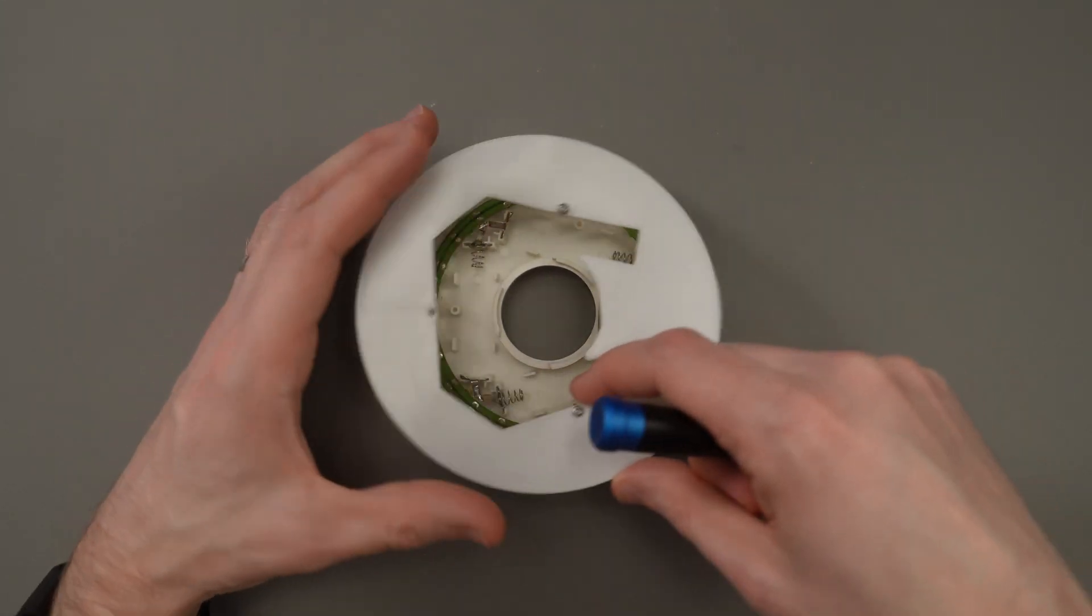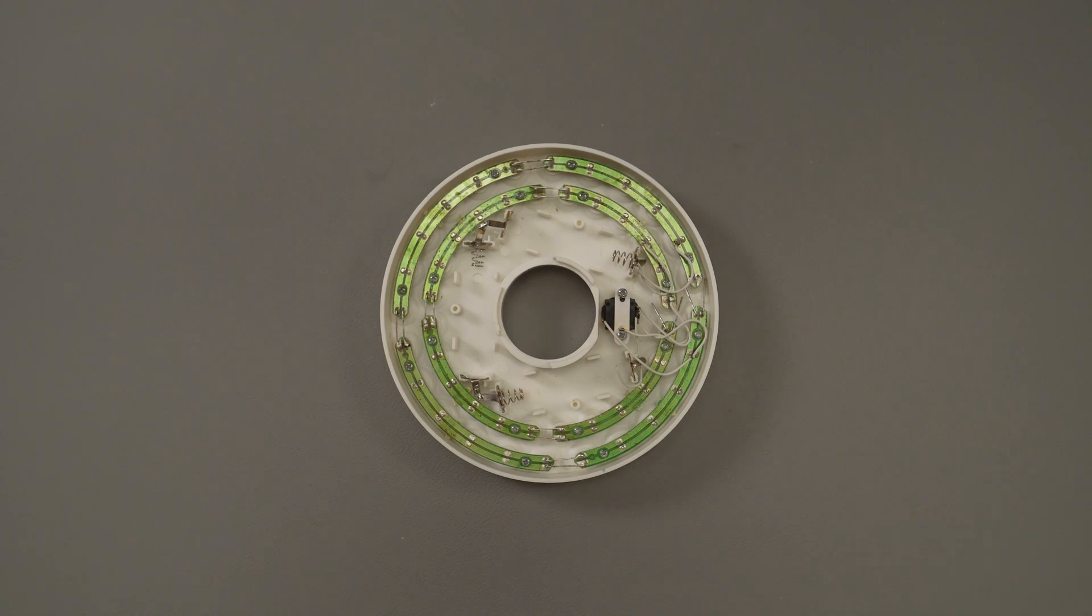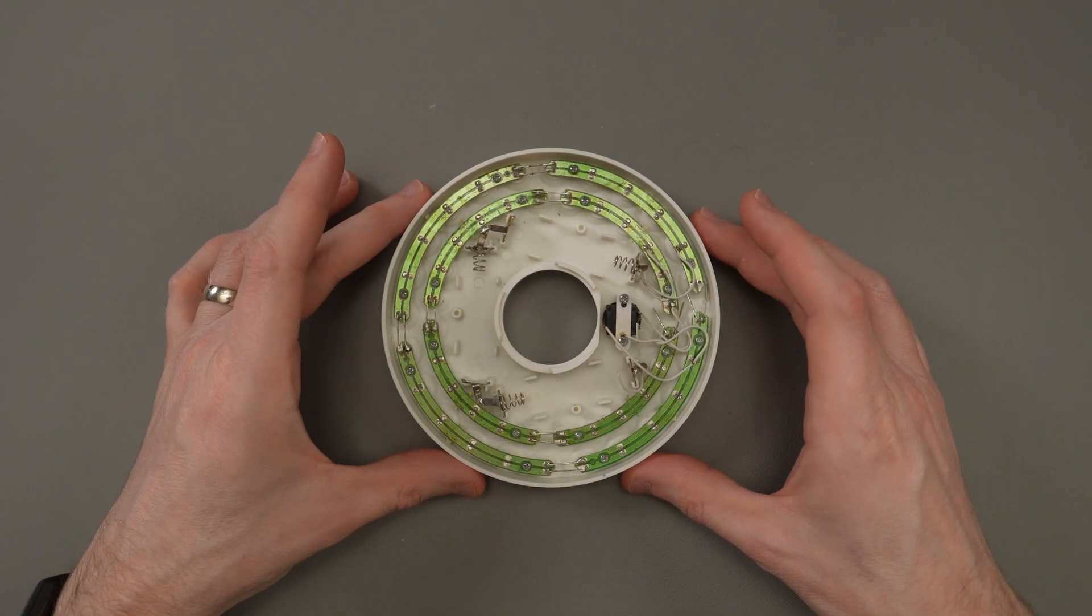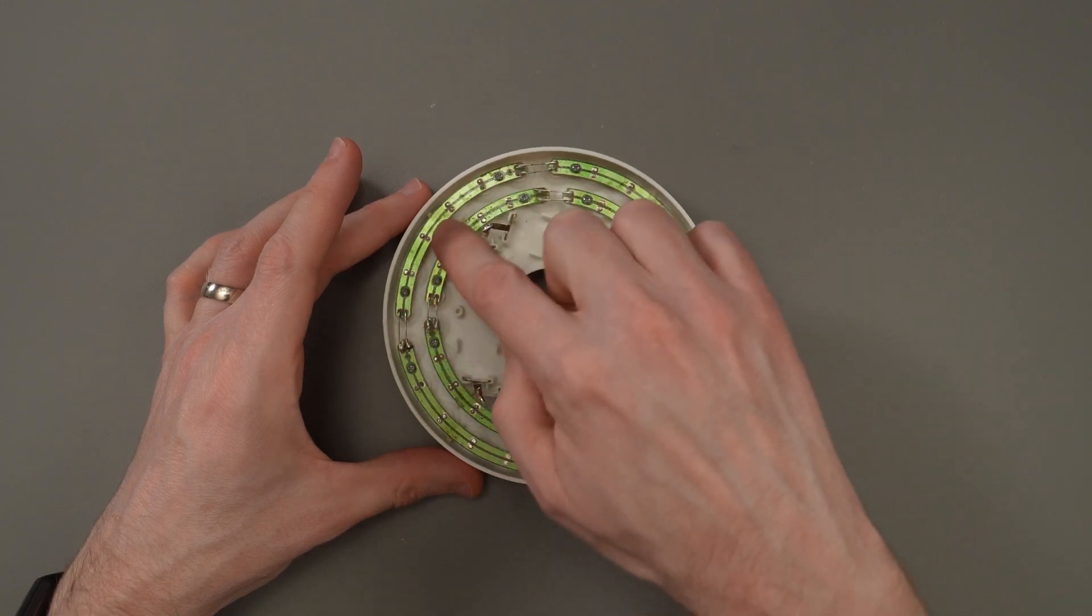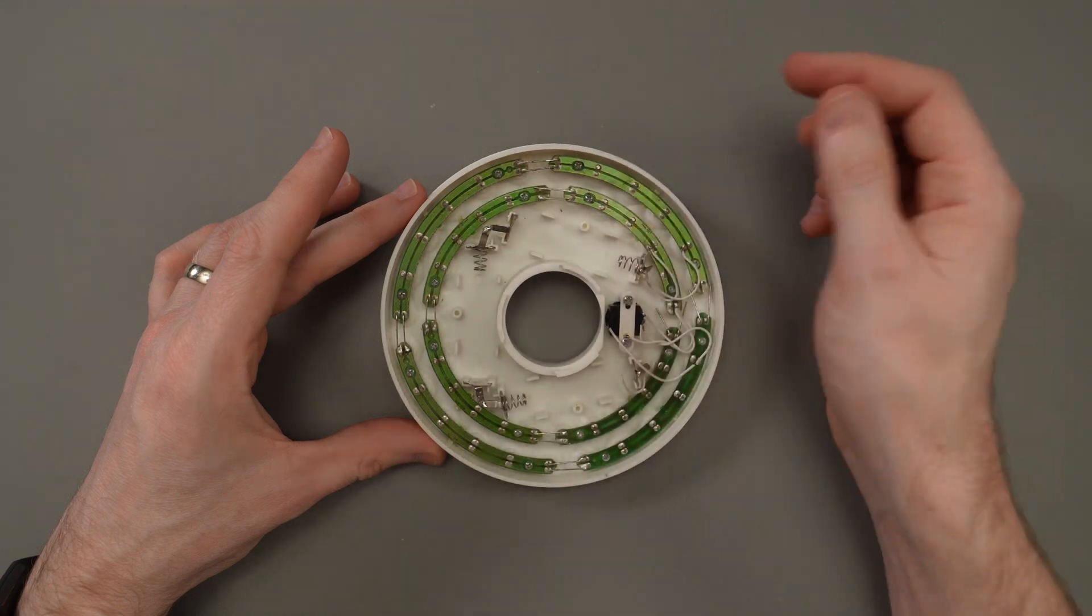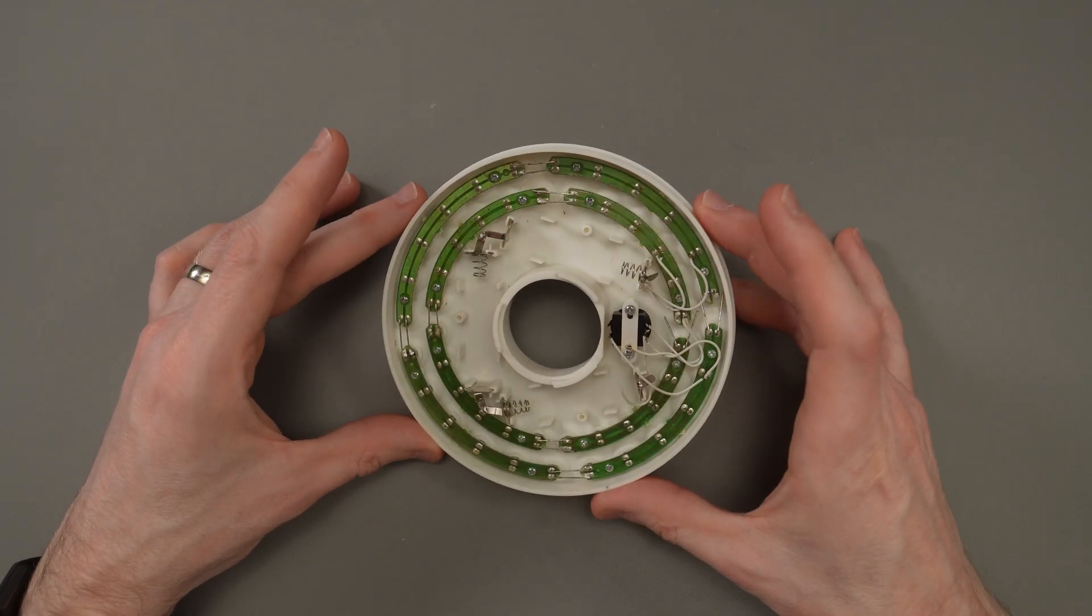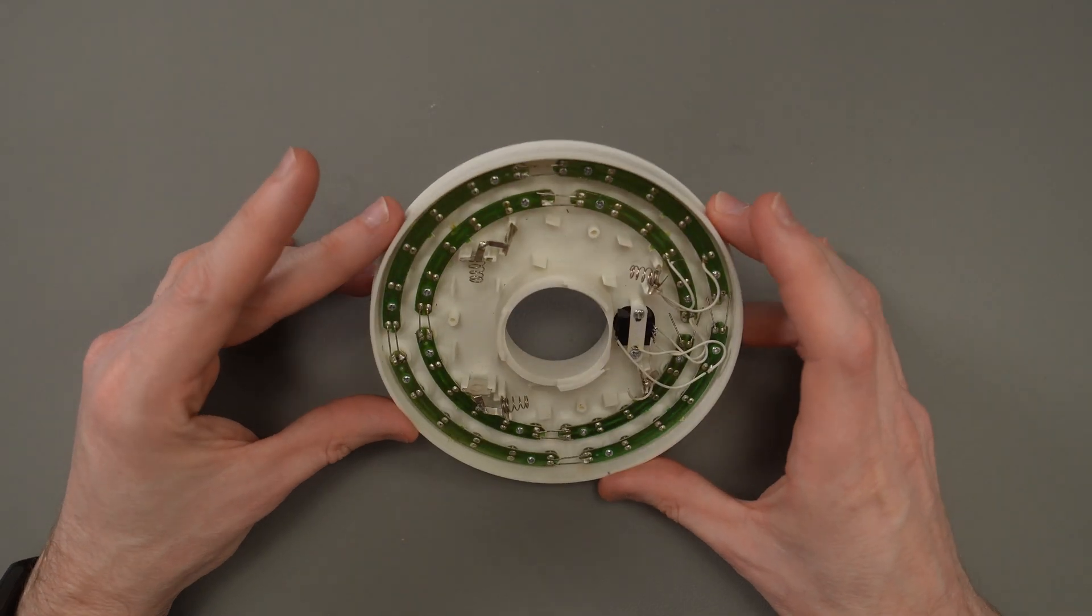Well, there you go. Fantastically constructed, cheap Chinese piece of equipment, as always. So yeah, look at that. So the LEDs are on these curved PCBs. That's quite interesting, isn't it? They've got like two traces per curved section. Really simple construction. They're all just wired in parallel.